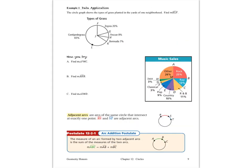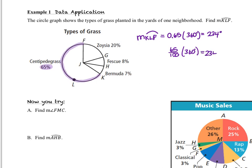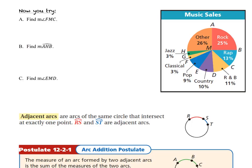Let's take a look at example one, where we have a circle graph showing the types of grass planted in the yards of one neighborhood. We want to find the measure of arc KLF. Arc KLF starts at K, goes through L, and ends at F. The measure of arc KLF equals 0.65 times 360 degrees, since it is 65% of the entire circle, which gives us a degree measurement of 234 degrees. Now pause the video to practice finding measures of central angles and arcs, and turn it back on when you're ready to check your answers.